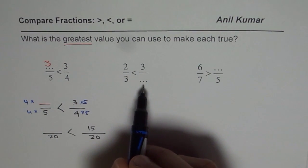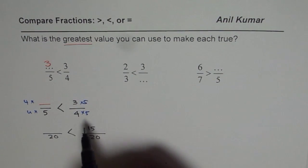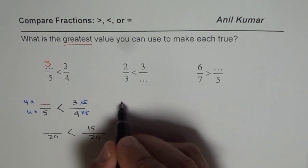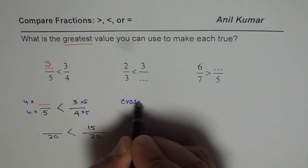Now let's look into this question. 2 over 3 is less than 3 over something, and what is that number? How do you get this number? Well, the idea here is you could cross multiply. So we will have strategy called cross multiply here.